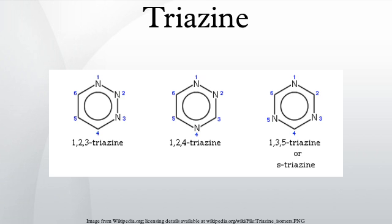A triazine is a class of nitrogen-containing heterocycles. The parent molecule's molecular formula is C3H3N3. They exist in three isomeric forms, with 1,3,5-triazine being the most common. The triazines have a planar six-membered benzene-like ring but with three carbons replaced by nitrogens.